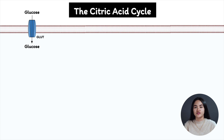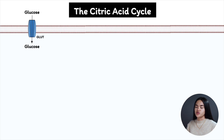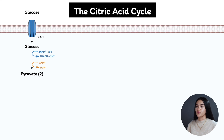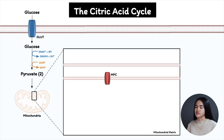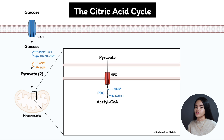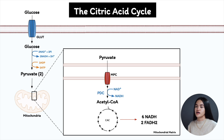Before we go through the reactions, let's first review how we ended up here, beginning with glycolysis. In glycolysis, we took a molecule of glucose and broke it down in a series of enzymatic reactions to two molecules of pyruvate. The pyruvate produced in the cytosol is then transported into the mitochondrial matrix by the mitochondrial pyruvate carrier, where it's converted to acetyl-CoA by the pyruvate dehydrogenase complex. The acetyl-CoA can then enter the citric acid cycle to be oxidized, releasing energy and forming ATP molecules.